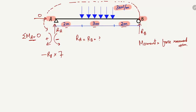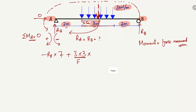The other force creating a moment about point A is the 3 kilonewton per meter uniformly distributed load. Acting downward, it creates a clockwise moment about A, so it is positive: plus 3 kilonewton/m multiplied by 3 meters (the distributed length), giving the resultant force. This is then multiplied by the moment arm, which is located at the centroid of the UDL — 1.5 meters from its start (3 divided by 2). So the total moment arm from A is 2 + 1.5 = 3.5 meters.